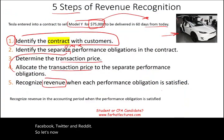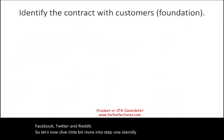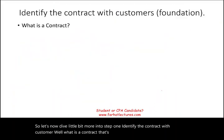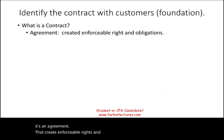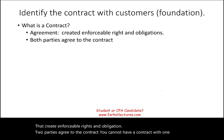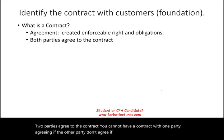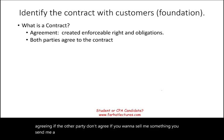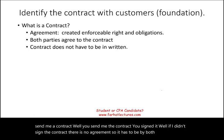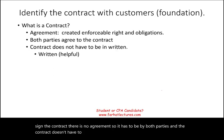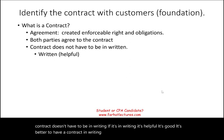Now let's dive deeper into step one: identify the contract with the customer. What is a contract? It's an agreement that creates enforceable rights and obligations. Two parties have to agree — you cannot have a contract where only one party agrees. If you send me a contract and I don't sign it, there is no agreement. Also, a contract does not have to be in writing — though it's better if it is. Sometimes it's simply not feasible.